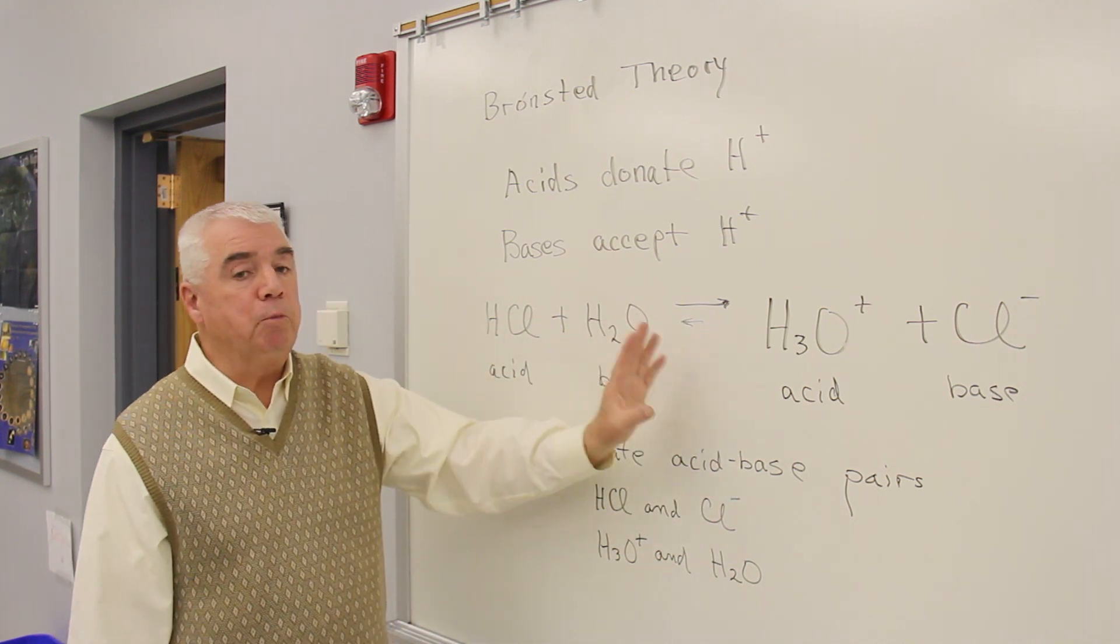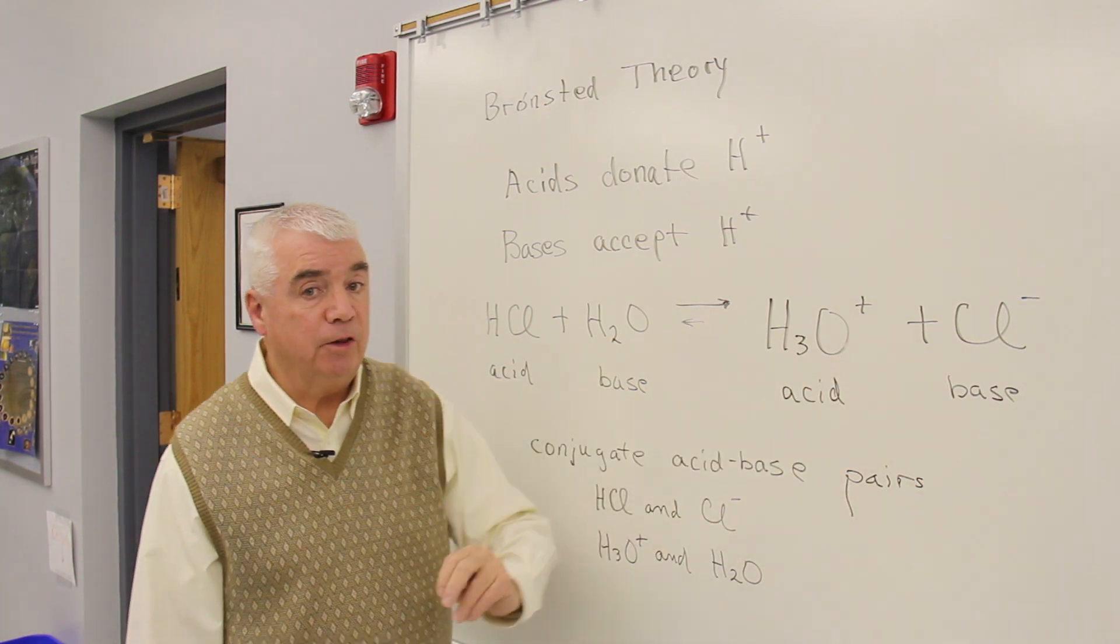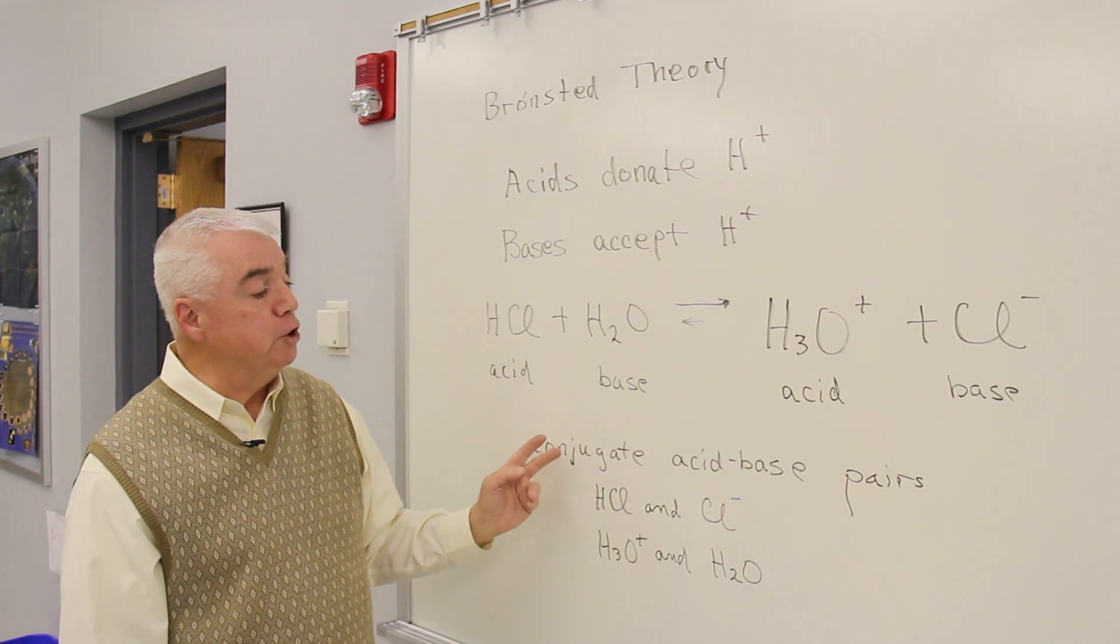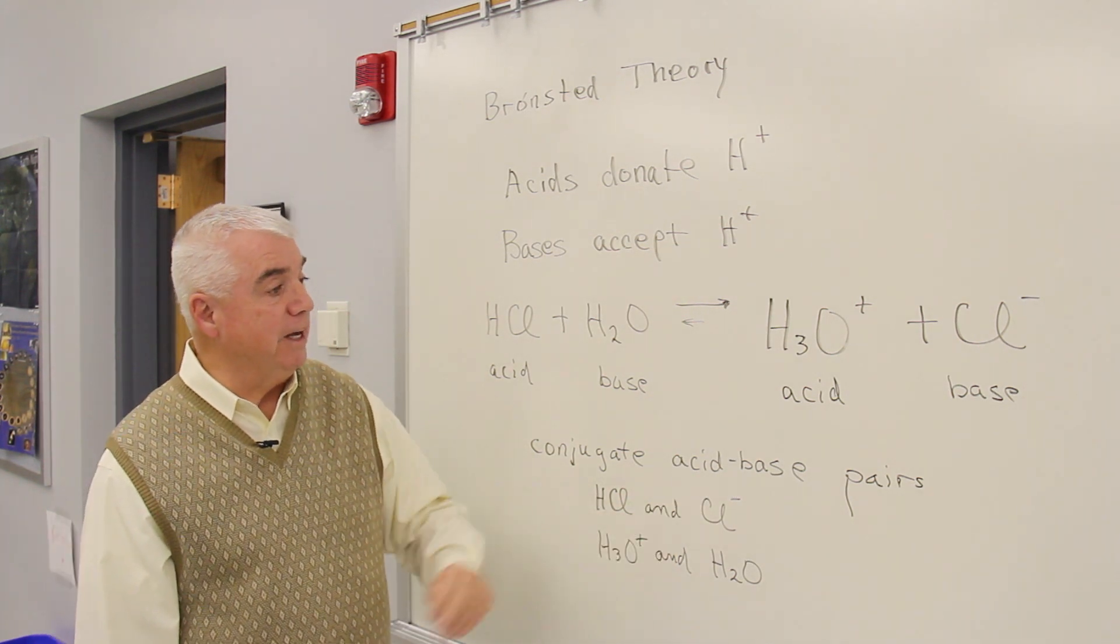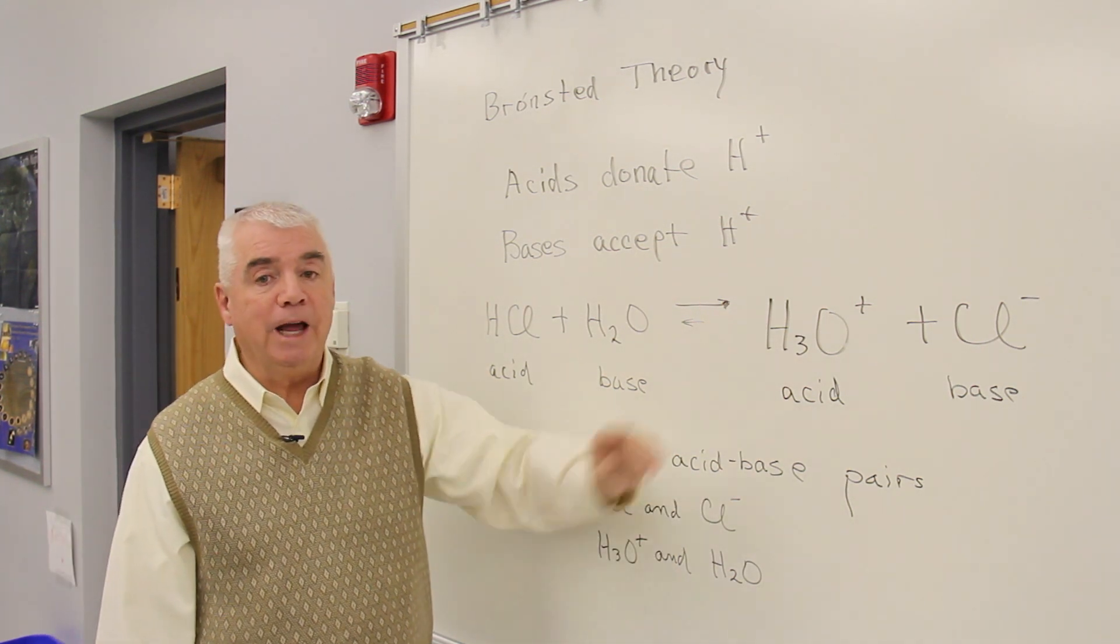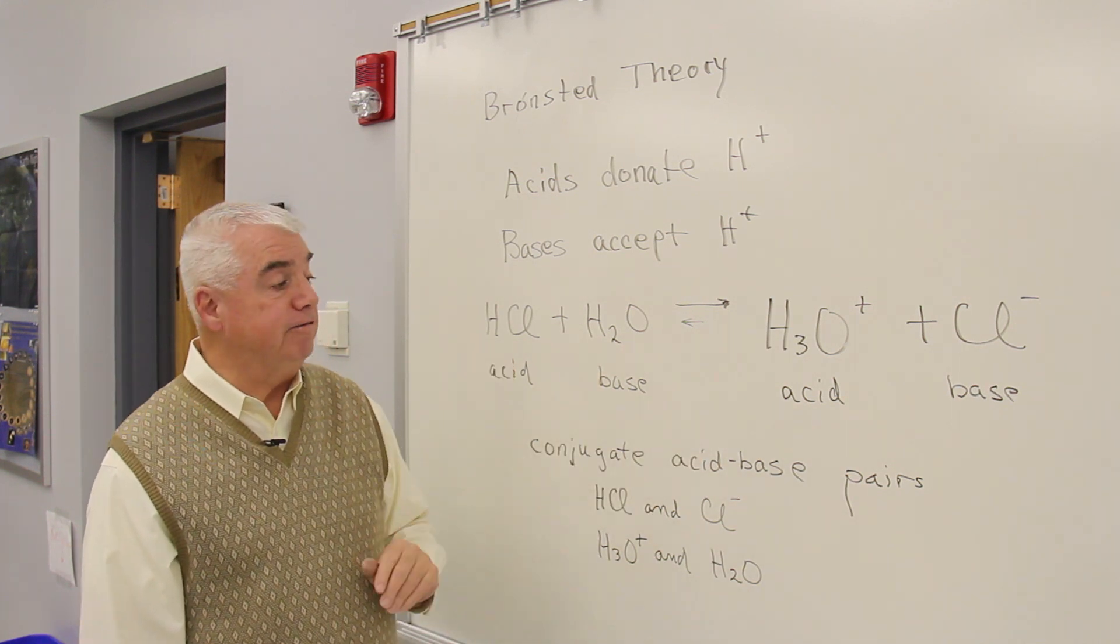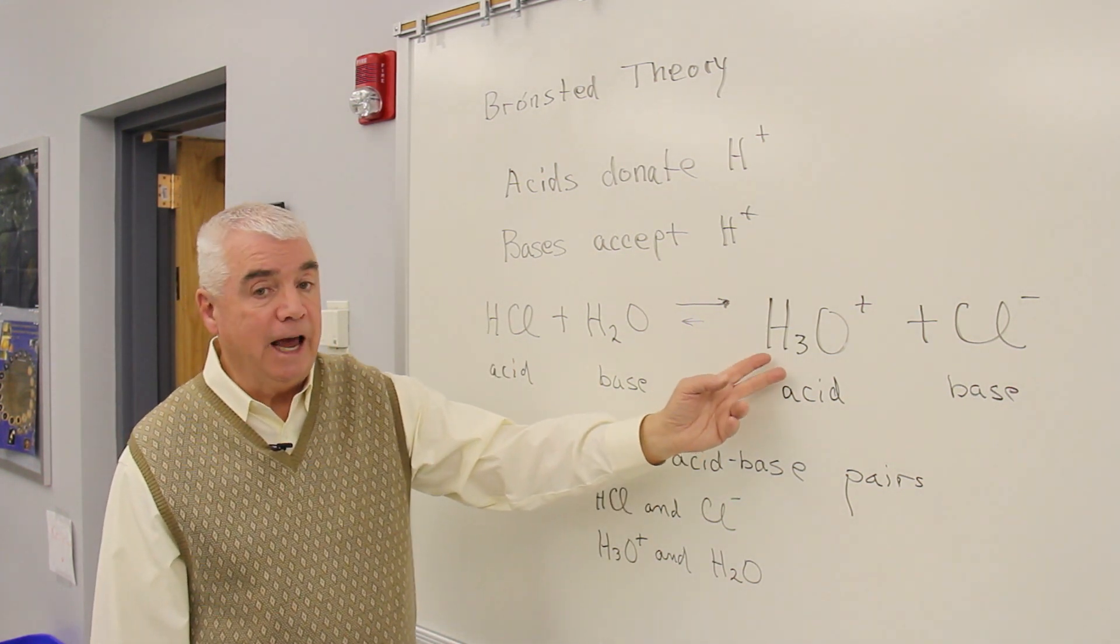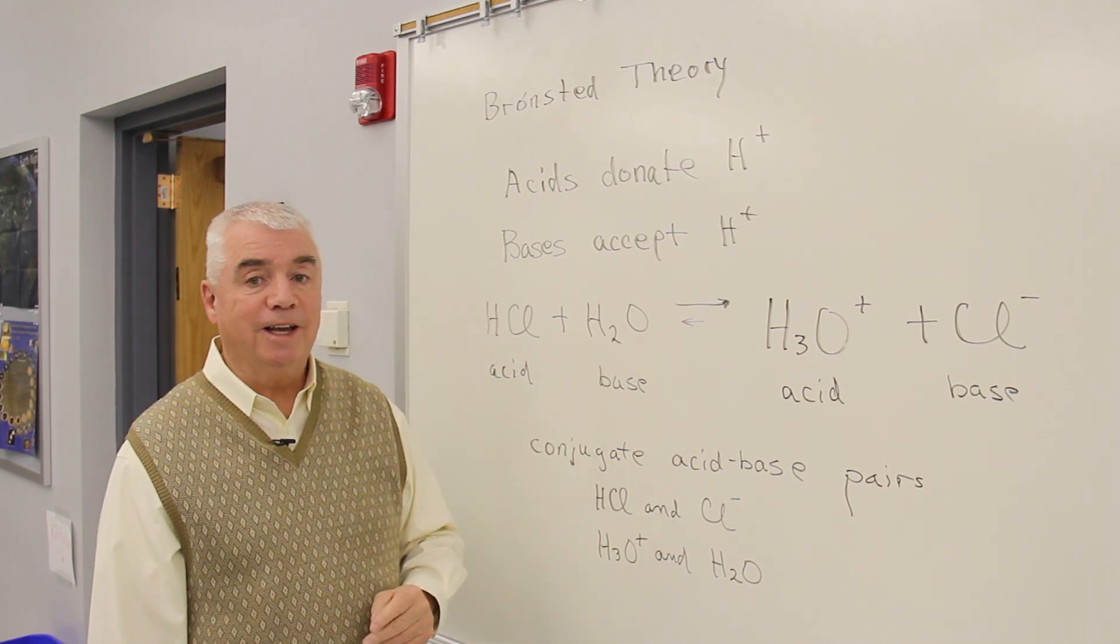Sometimes we couple these two, the acid and the base that are formed, and call them a conjugate acid-base pair. That would be HCl and Cl- in the reaction proceeding to the right. Going to the left, the Bronsted acid, H3O+, and its conjugate base, H2O.